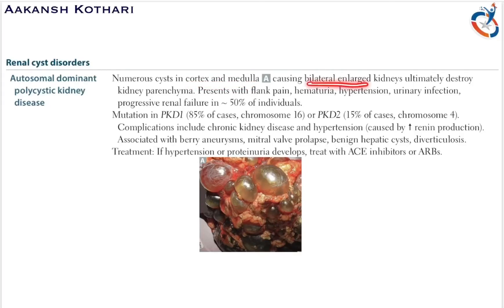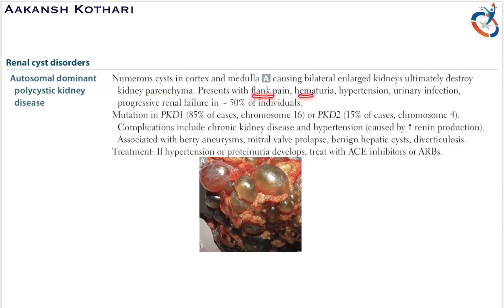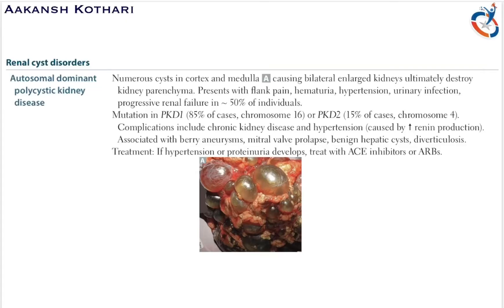To summarize: there is presence of cysts in the cortex and medulla, bilateral enlarged kidneys due to destruction of the renal parenchyma, presented by flank pain, hematuria, hypertension, and urinary infection. 50 percent of individuals progress to renal failure. Complications include chronic kidney disease and hypertension leading to progressive renal failure.